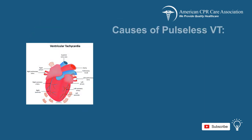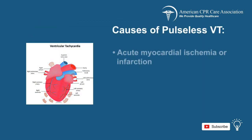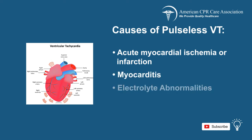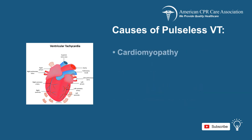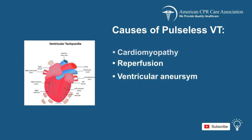The causes of pulseless VT are acute myocardial ischemia or infarction, myocarditis, electrolyte abnormalities such as hypokalemia and hypomagnesemia, various medications, cardiomyopathy, reperfusion, and ventricle aneurysm.